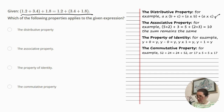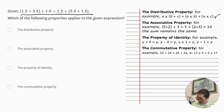The next one is the property of identity. A number known as the identity can be added to, subtracted from, multiplied by, or divided into a number without changing the number. For example: y plus 0 equals y, y minus 0 equals y, y times 1 equals y, y divided by 1 equals y.